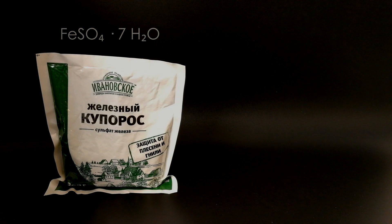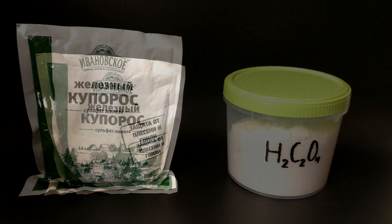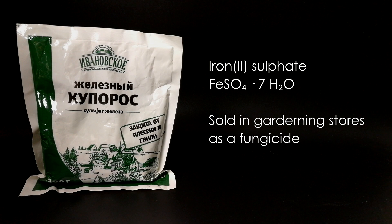This synthesis will first of all need iron 2 sulfate and oxalic acid. Iron 2 sulfate heptahydrate or simply ferrous sulfate can be easily bought in a gardening store where it is sold as a fungicide.